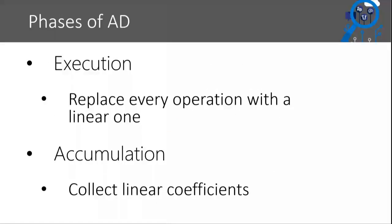The way I'm going to explain AD is that it works in two phases. The first phase is an execution phase where you go through the original program and replace every operation with a linear operation - you linearize the program, but only the mathematical operations, not the control flow. Then secondly, you perform this accumulation phase, which essentially collects all the linear coefficients, all the coefficients of these linear operations. And that's how you get your gradient.